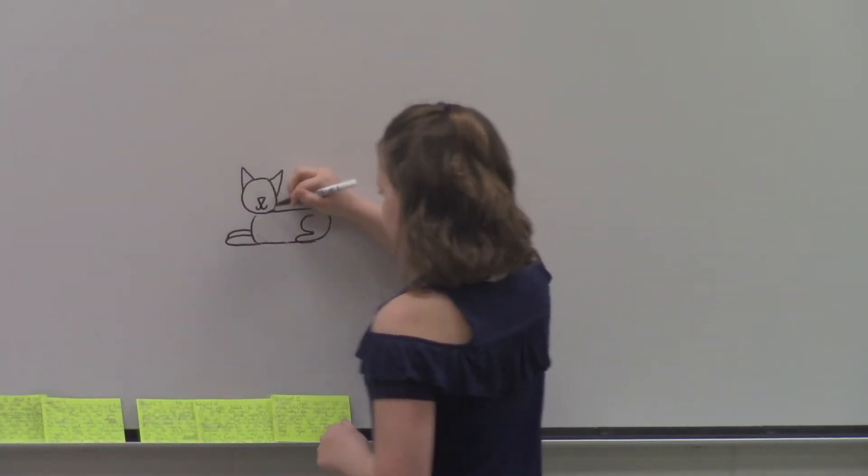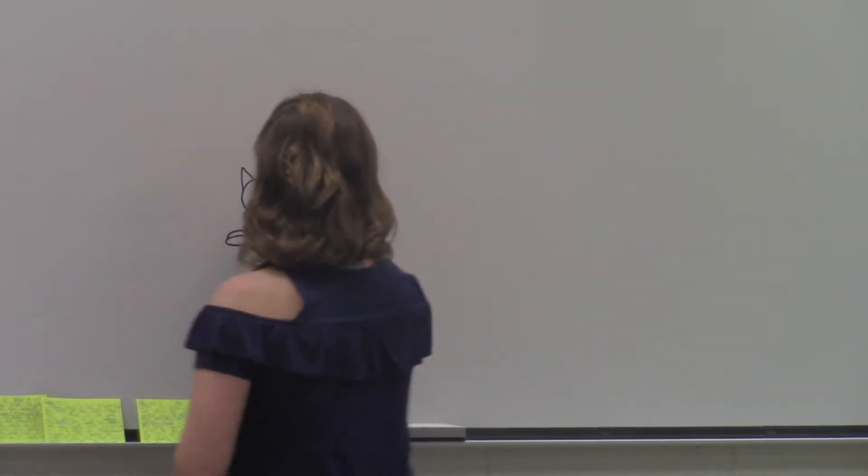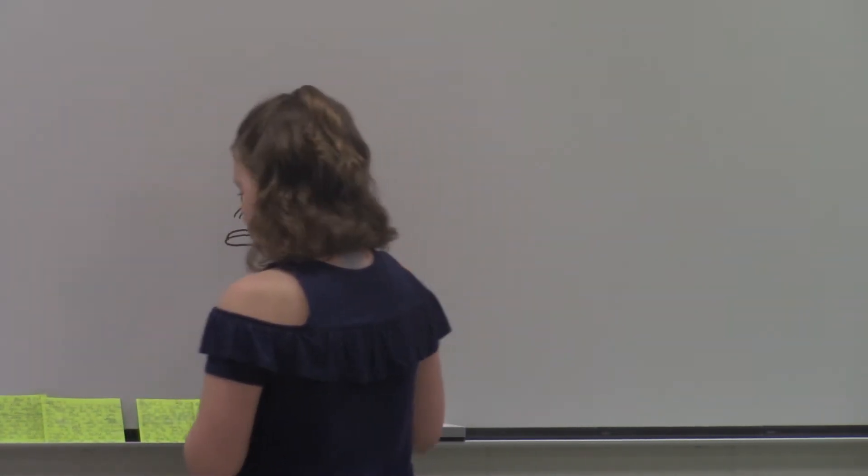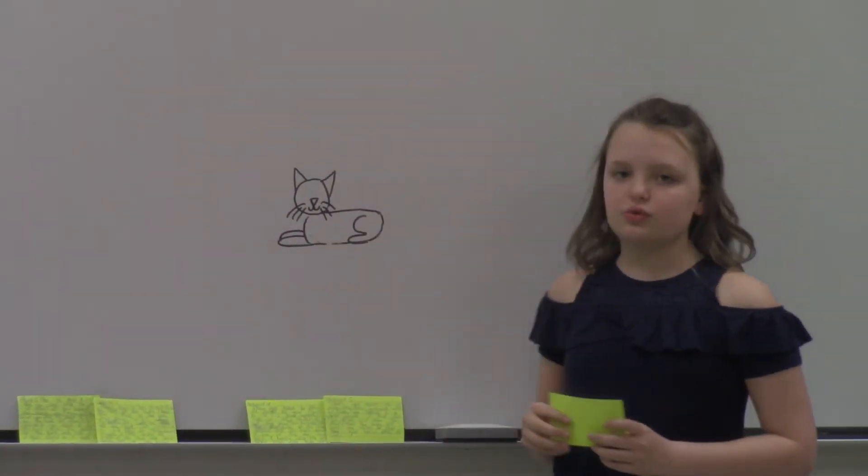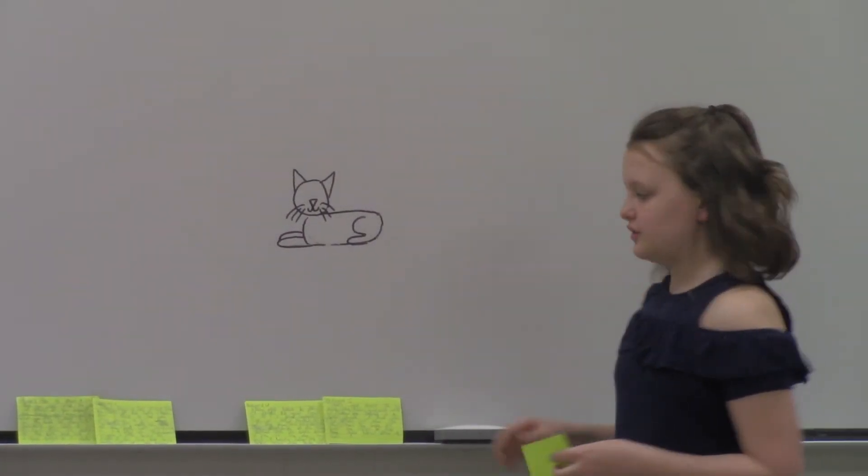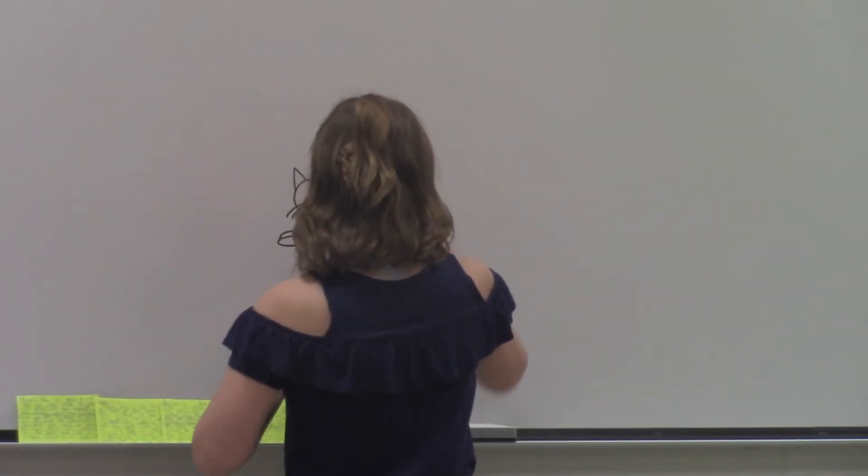And then, add whiskers. Add ovals or pupils for eyes, or just do it another way. It doesn't really matter, depending on what you spell.